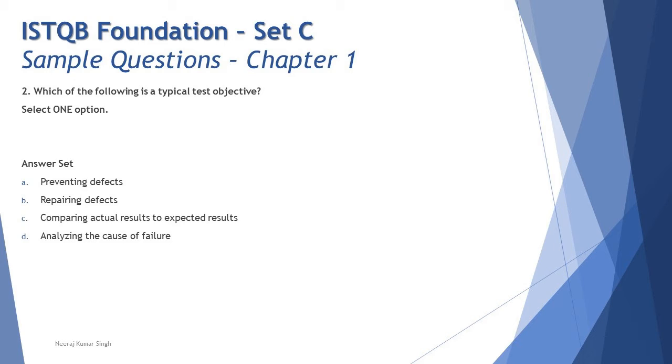Finally we are left with one option which is preventing defects. Yes, by participating in the reviews, conducting static testing on several work products we prevent the defects and that's one of the major objectives with other objectives like finding defects, gaining confidence, providing information. So the right answer here is A: preventing defects is one of the typical test objectives and should be considered.